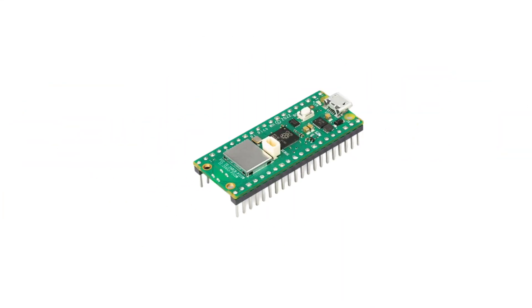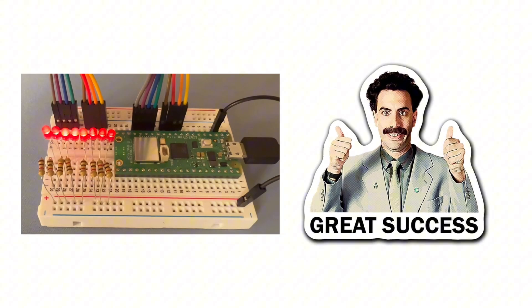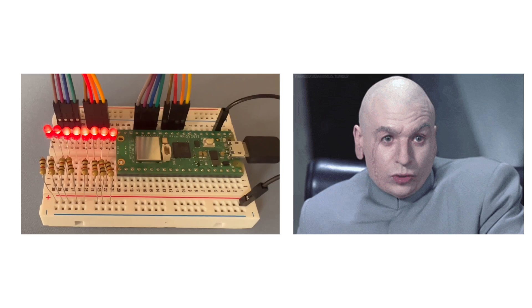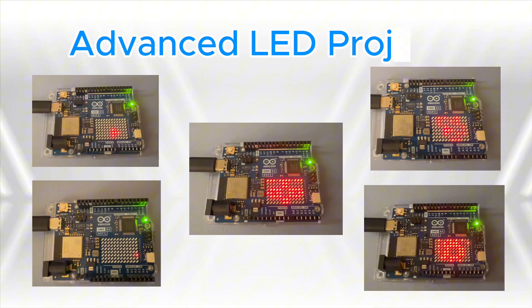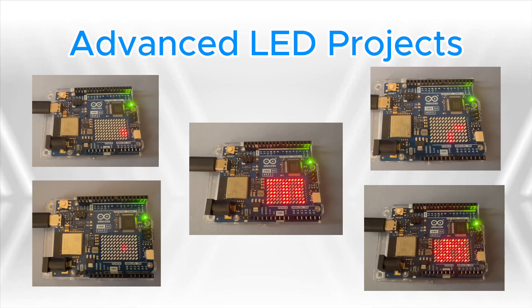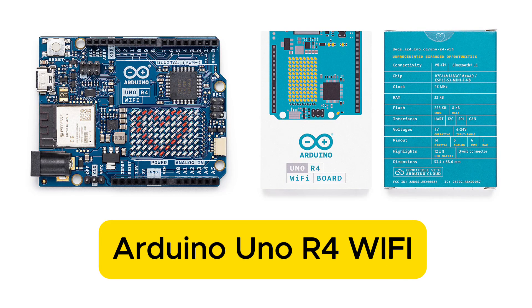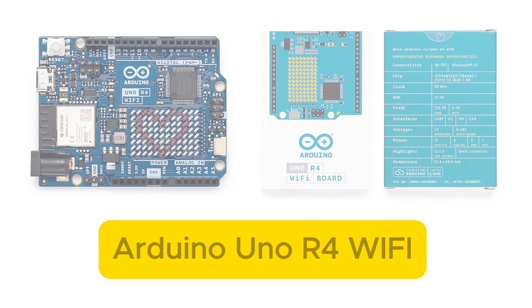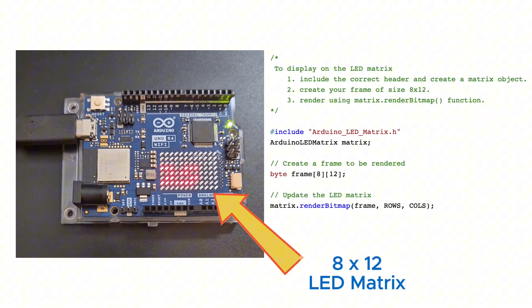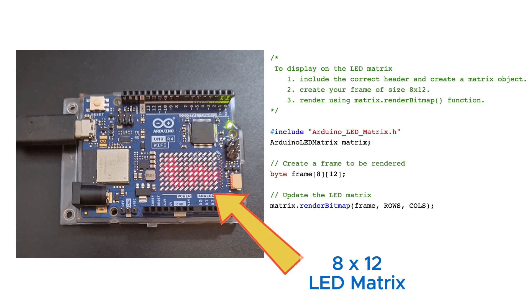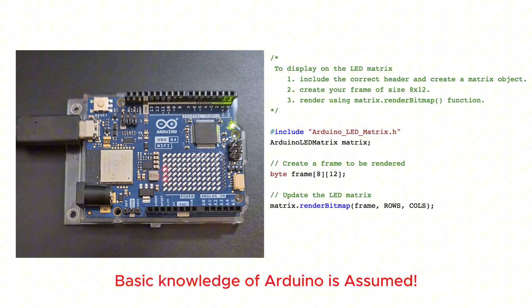So you bought an Arduino or a Pico and turned on some LEDs, but no one is impressed. Let's look at some mathematically advanced projects that you can build using just LEDs. For these projects we will use an Arduino Uno R4 WiFi board which has an inbuilt 8 by 12 LED matrix.